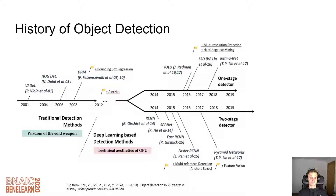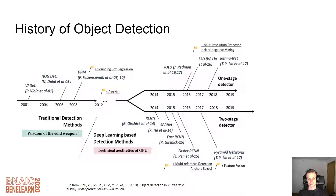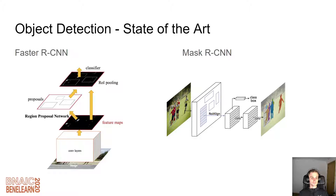Brief history of object detection: we've got all the traditional detection methods followed up by the deep learning era. We're really focusing on the two-stage detectors as we're trying to go for increased accuracy rather than real-time detection, although these are still pretty fast. We have the famous Faster RCNN object detection system, and then the extension of this, Mask RCNN, which allows us to do semantic segmentation and pixel-by-pixel classification. This becomes useful when we're looking at clusters of apples.